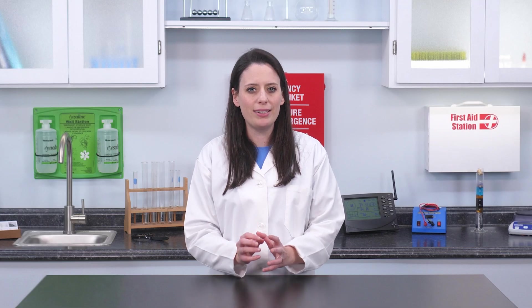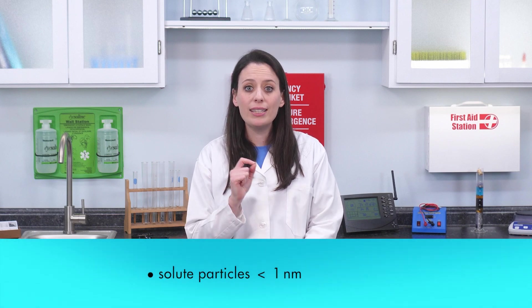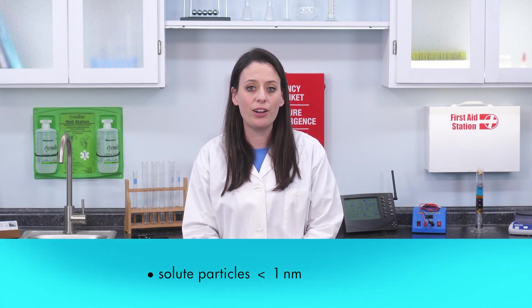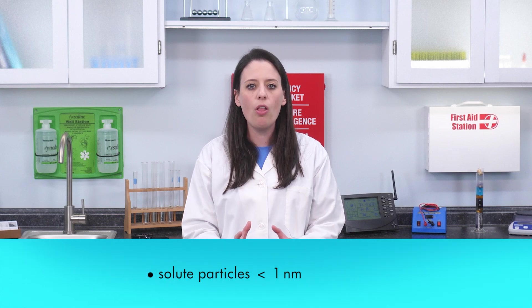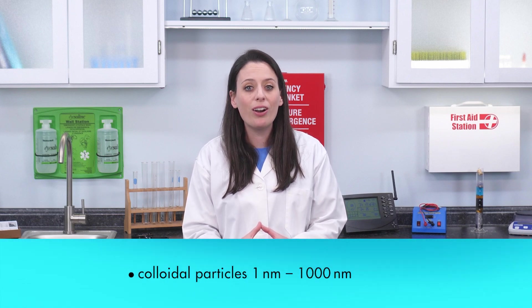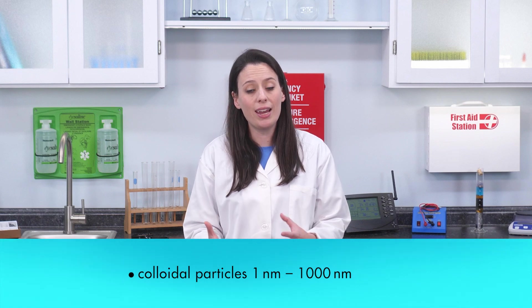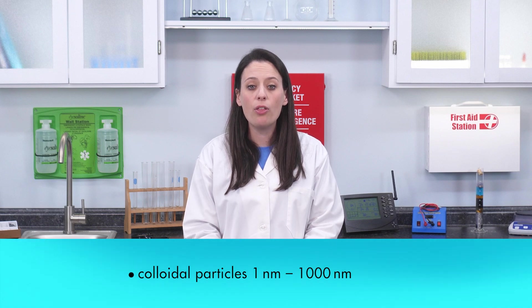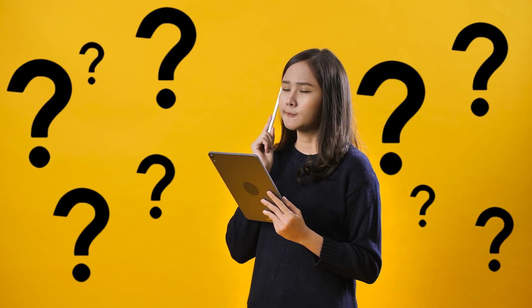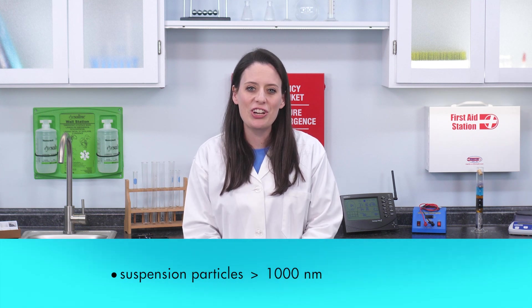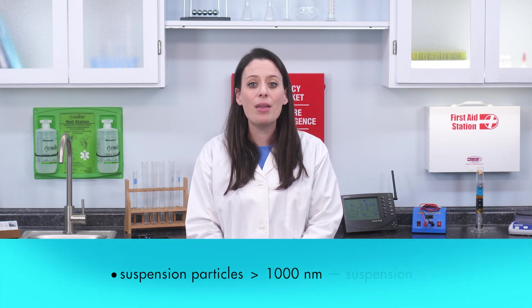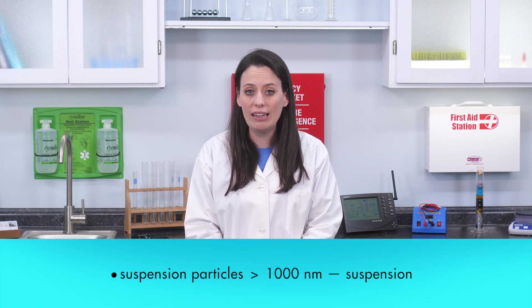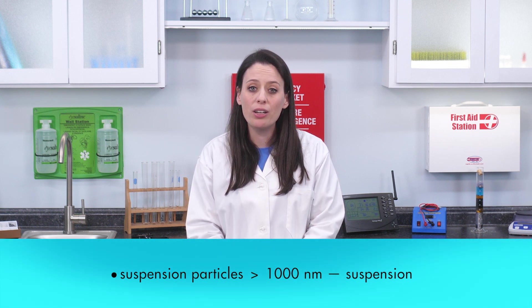Let's review just a moment. If the particles in a mixture are less than 1 nanometer in diameter, we call the mixture a solution. If the particles in a mixture are between 1 and 1000 nanometers in diameter, then we call the mixture a colloid. What do we call the mixture if the particles are larger than 1000 nanometers? If the particles in a mixture exceed 1000 nanometers, the mixture is called a suspension, and the particles are called suspension particles.